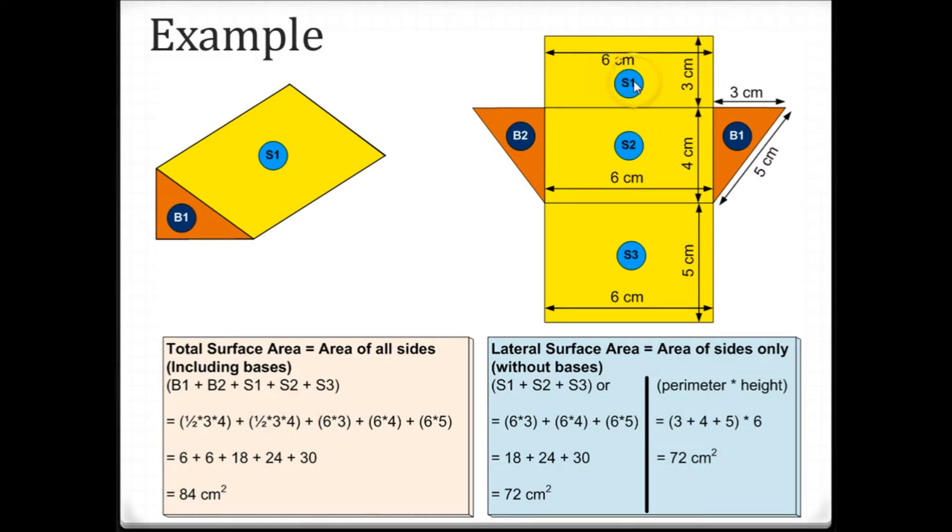Then 6 times 3 here. So surface area of s1 is 18, as shown here. Surface area of s2 is 6 times 4, which is 24, and the surface area of s3 is 6 times 5, which is 30. So total area, if you make the summation of all five sides, is 84 centimeters squared.